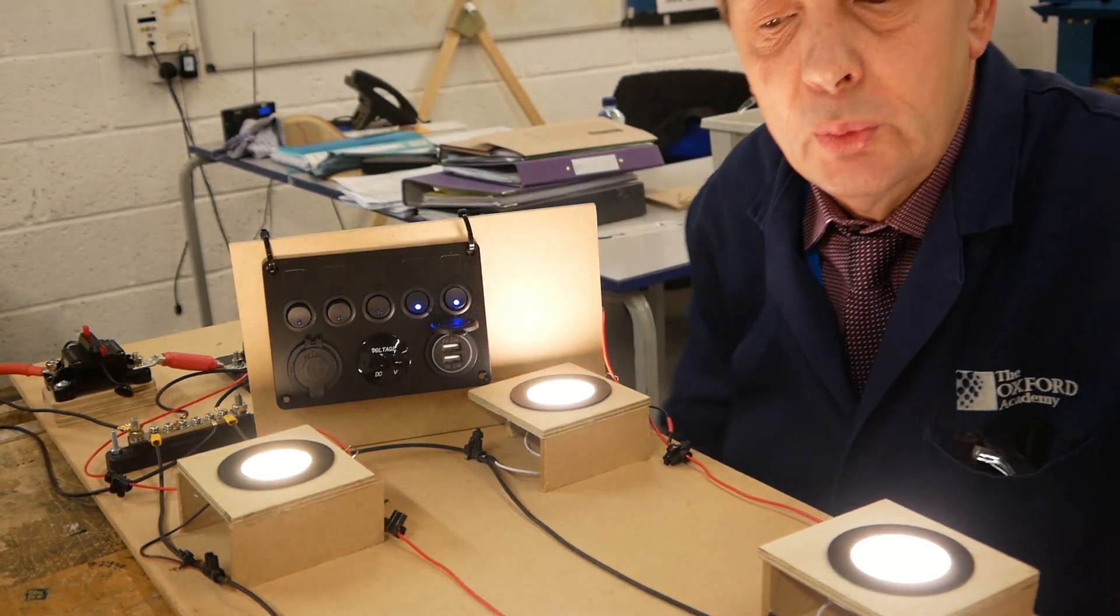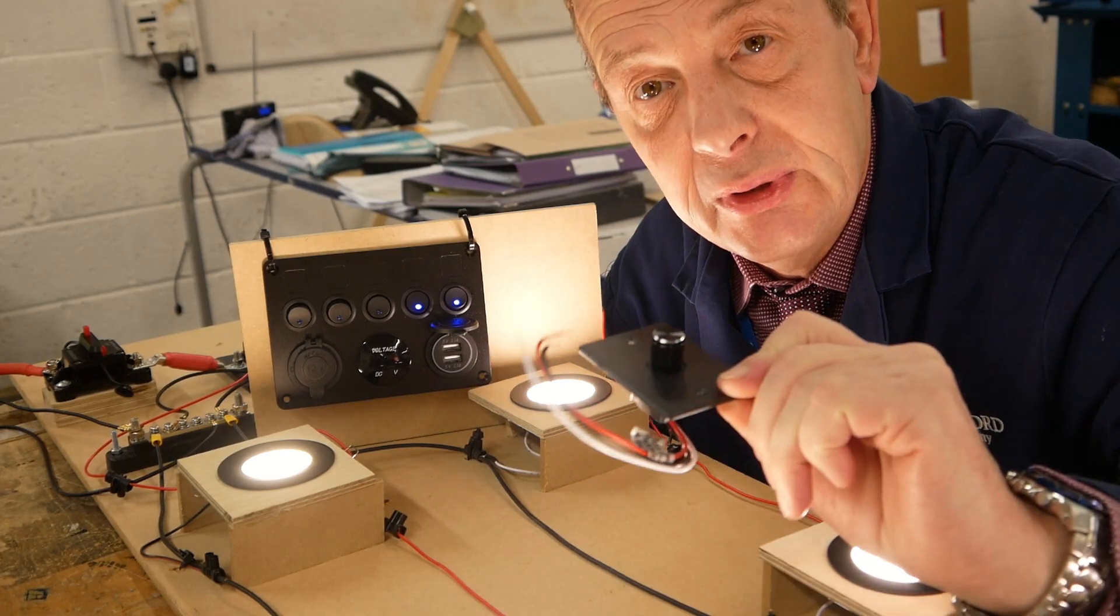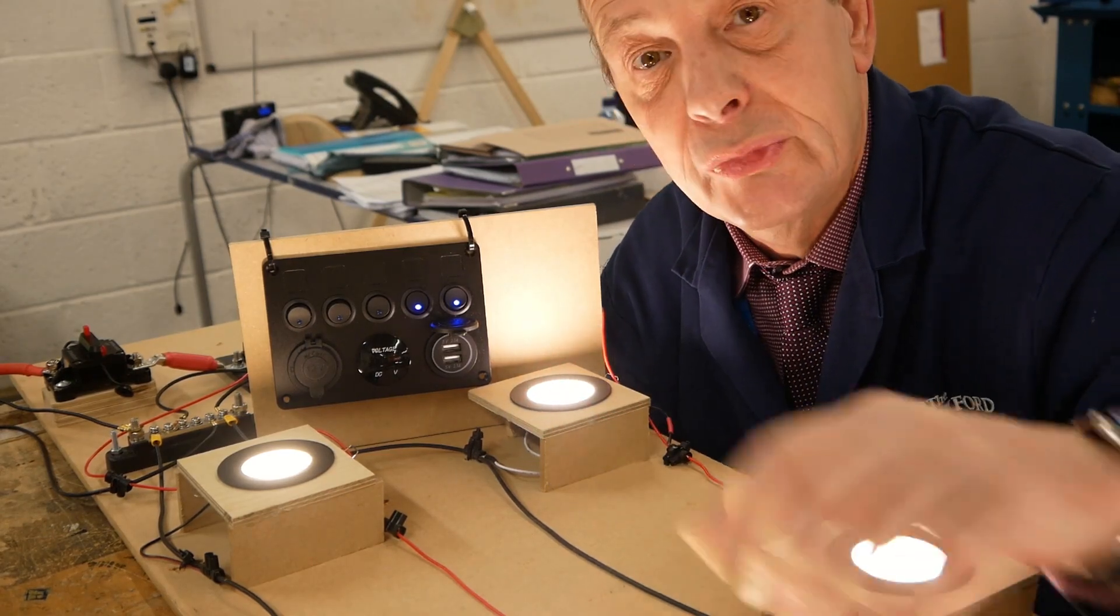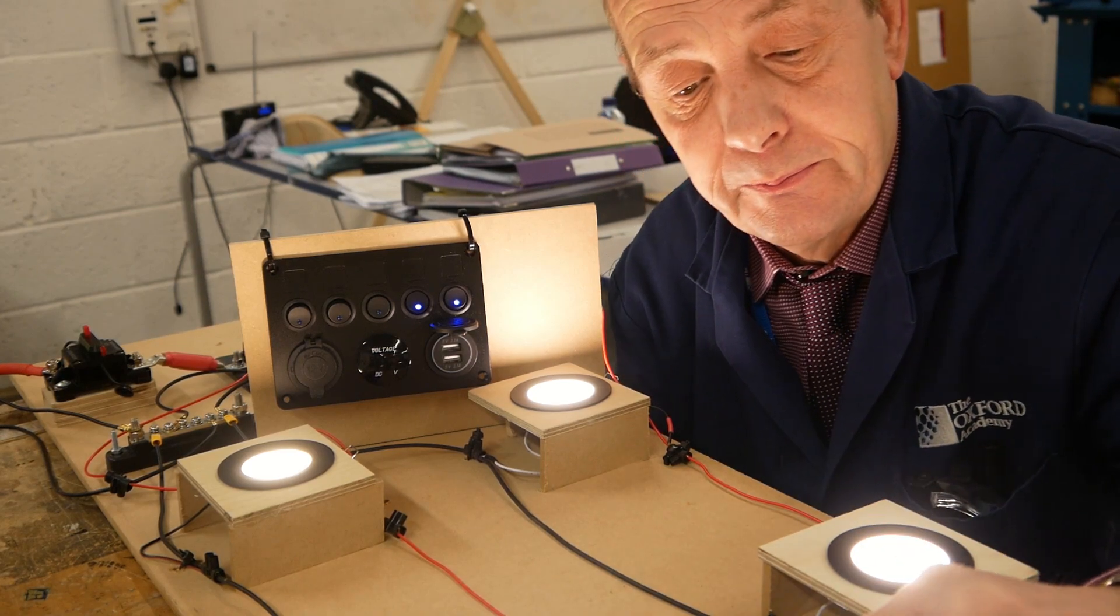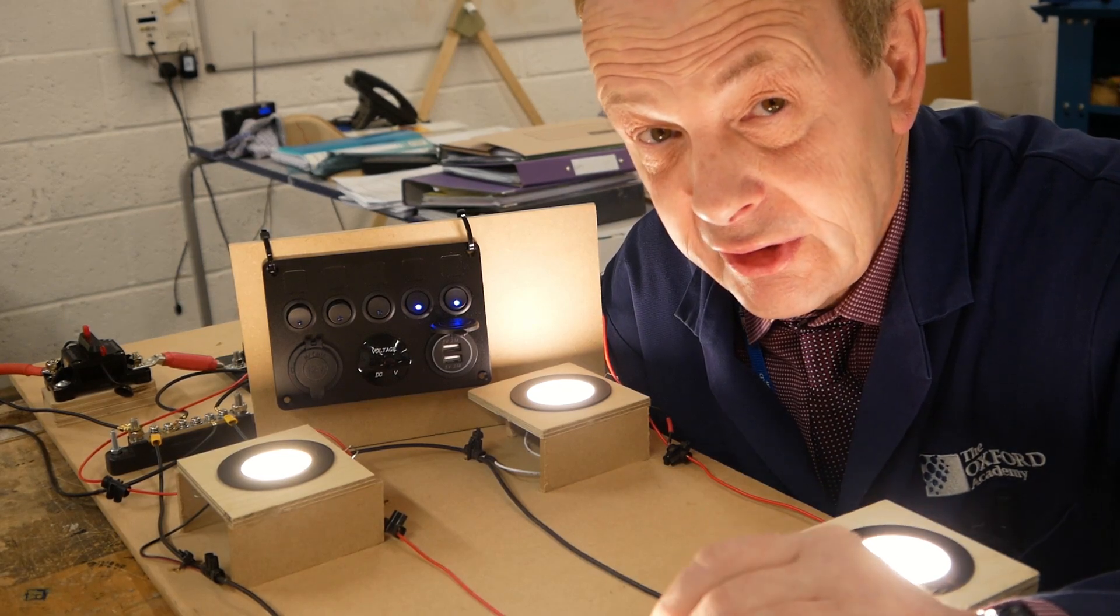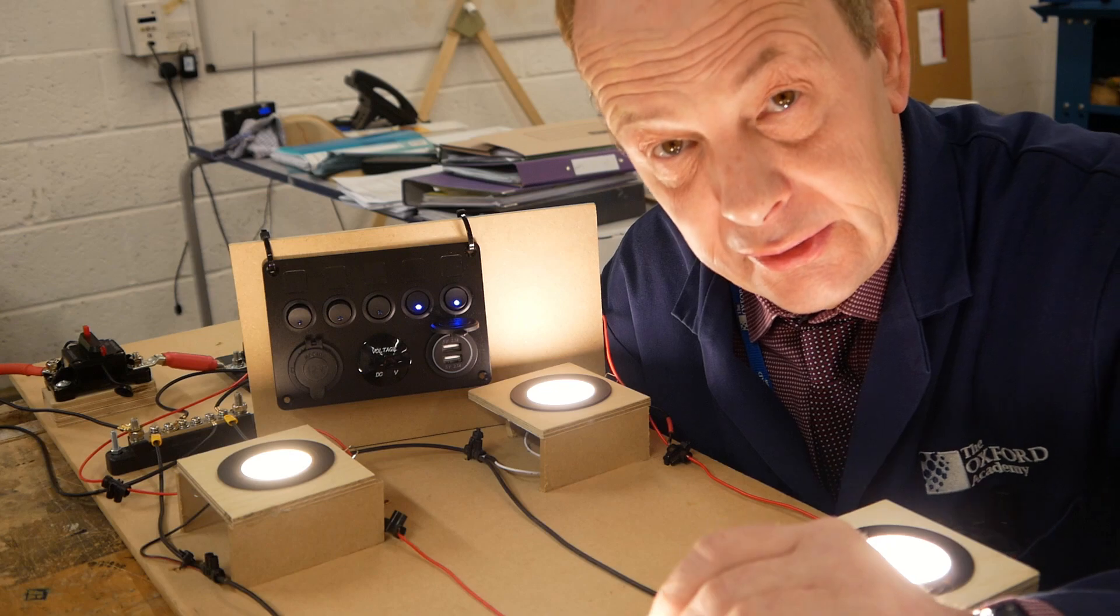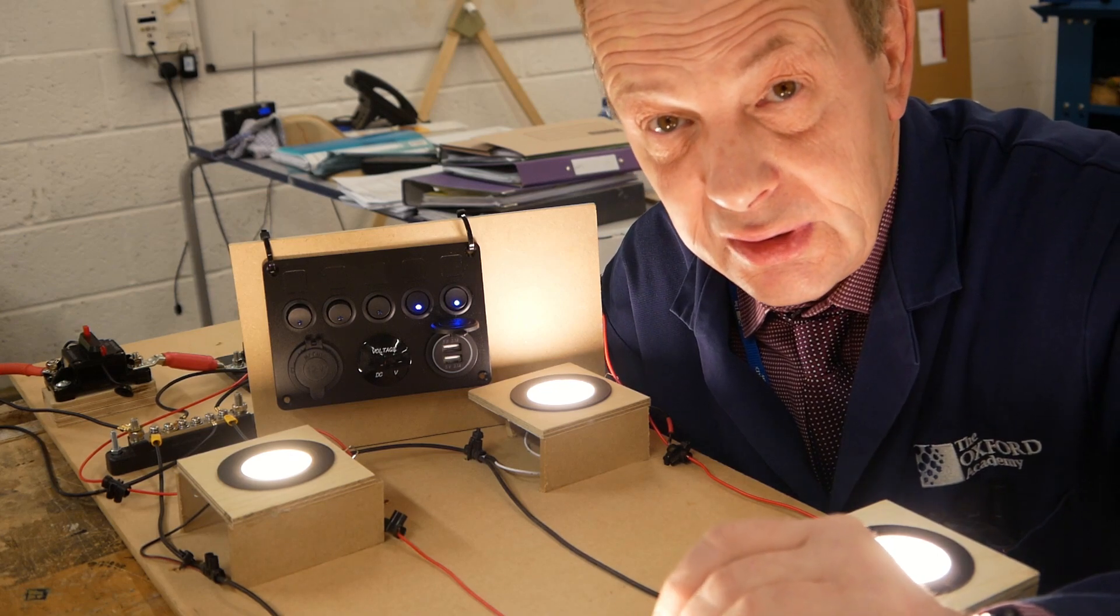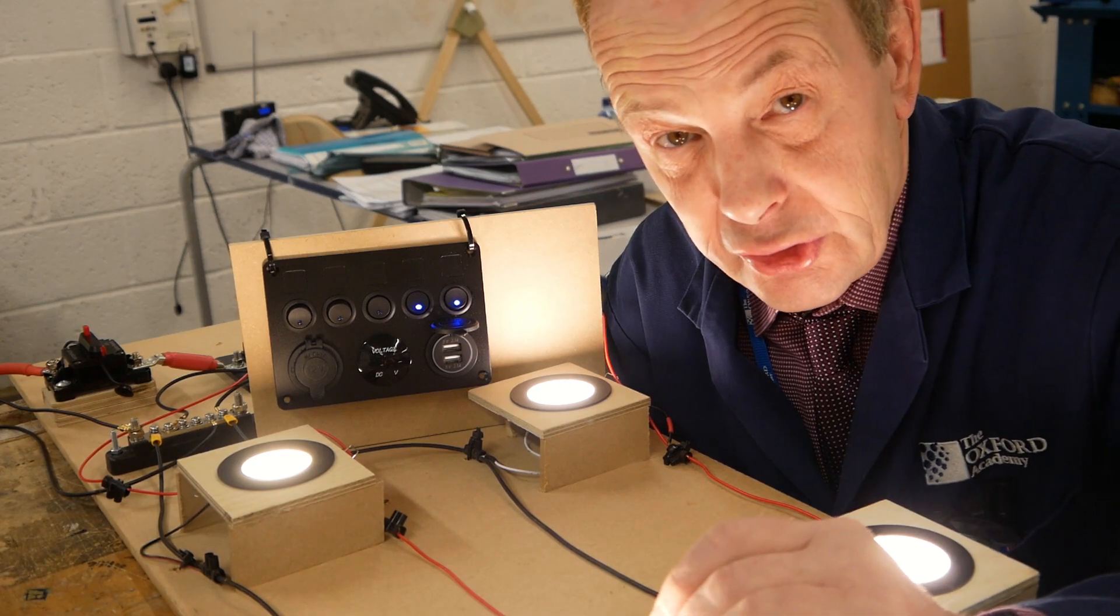So everything works as we planned and now we want to take a look at our dimmer switch and put that into our 12 volt lighting jig which will go into our van at a later date. I also need to apologize in advance as my director is 11 years old and has been given some creative license.